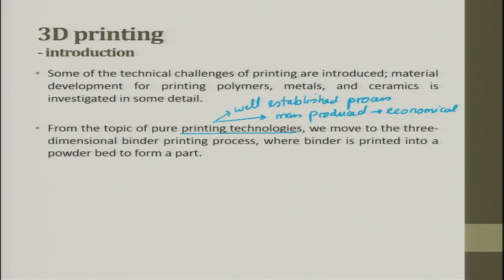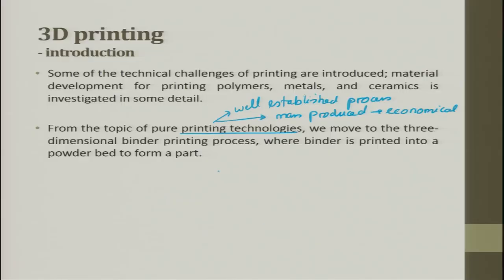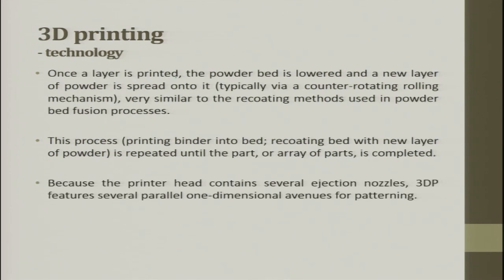That is why printing technology is now adapted in additive manufacturing or rapid manufacturing. Once the layer is printed, the powder bed is lowered — just like in the SLS process — and a new layer of powder is spread on it, very similar to the recoating method used in powder bed fusion processes. The process is repeated until the part or the array of parts is completed.